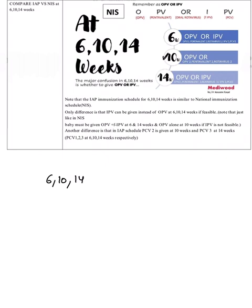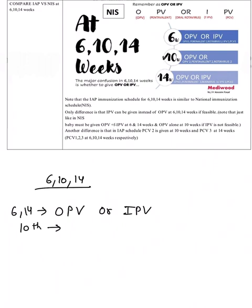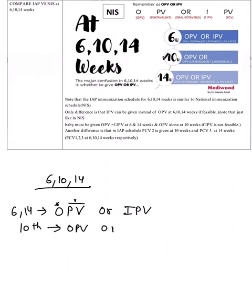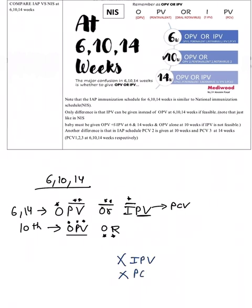For 6th and 14th weeks, remember the mnemonic OPV/IPV, and for 10th week it's OPV only. Breaking it down: O is for oral polio vaccine, PV is for pentavalent vaccine, OR is for oral rotavirus vaccine, I is for IPV, and PV is for pneumococcal conjugate vaccine (PCV). At 10th week, OPV, pentavalent, and rotavirus are given, but IPV and PCV are not given. IPV and PCV are given at 6th and 14th weeks.